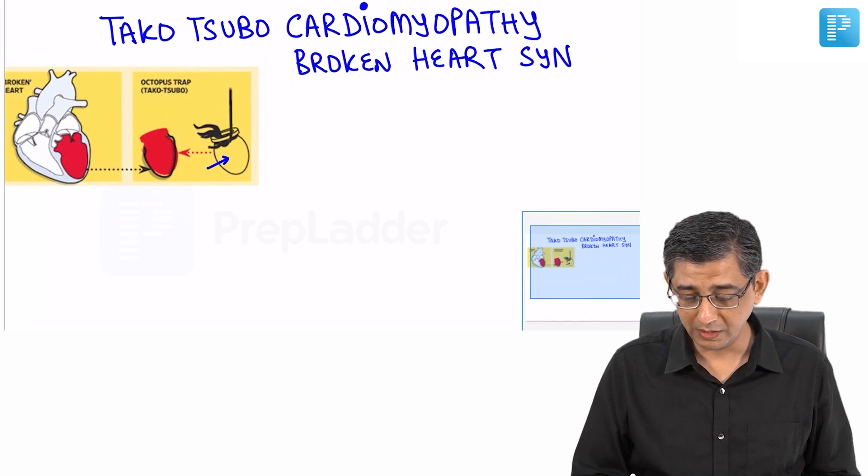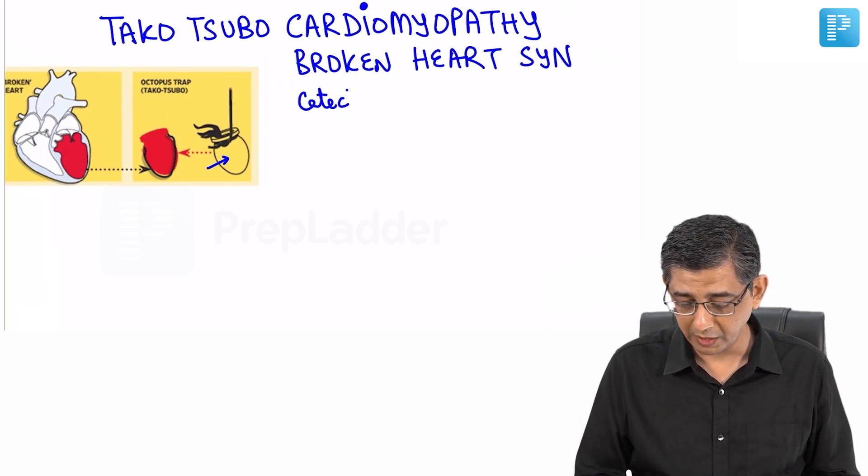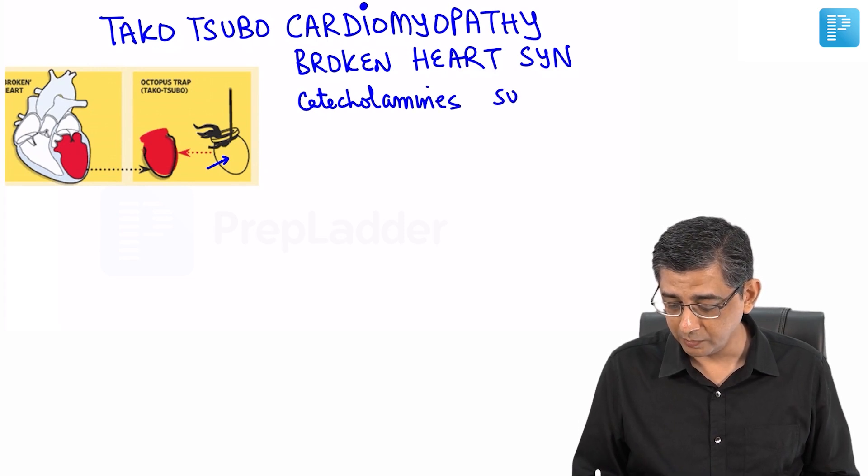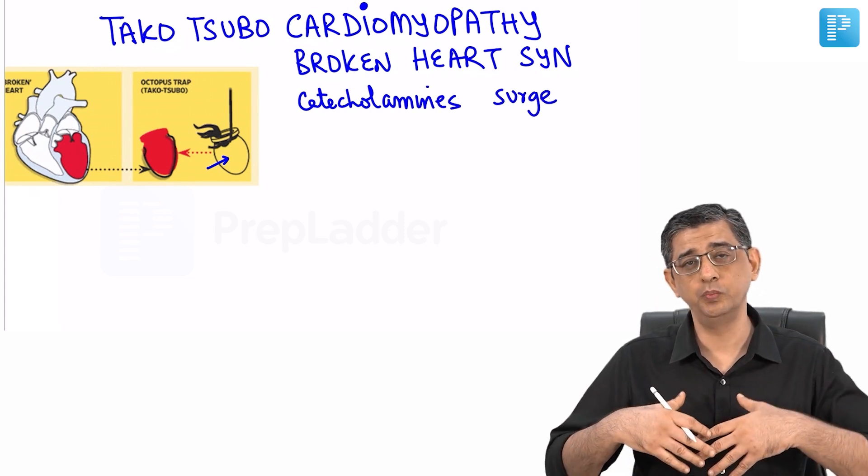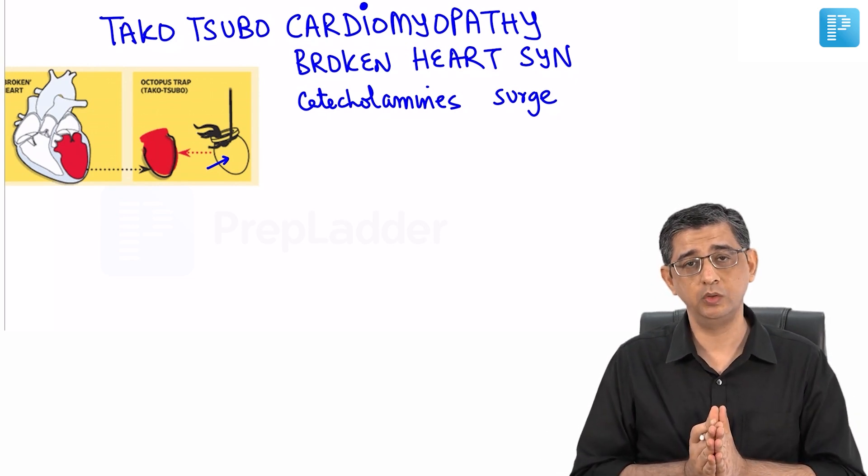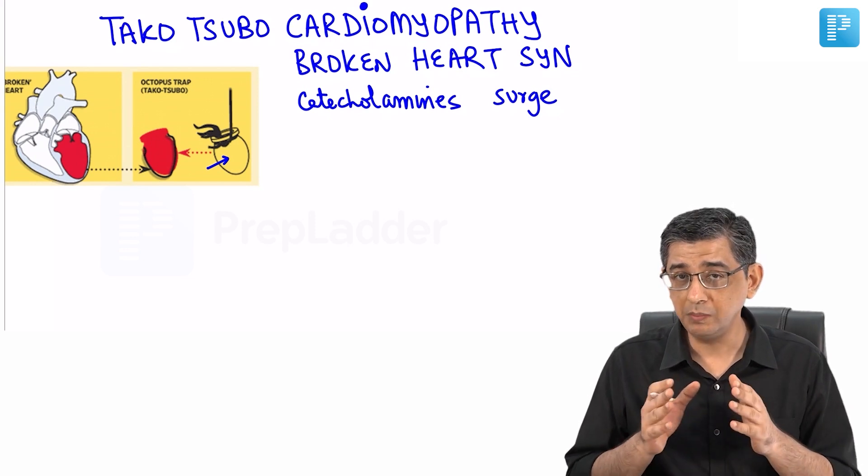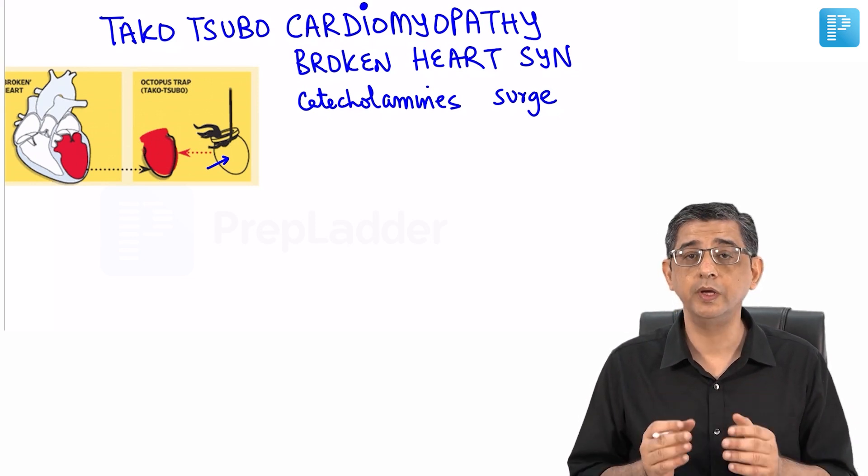The bottom line is that in this condition there will be so much of catecholamines released. The moment the catecholamine surge will occur, supraphysiological levels of catecholamine in the body after maybe an intense emotional trauma, the same catecholamines will now damage the myocardium.